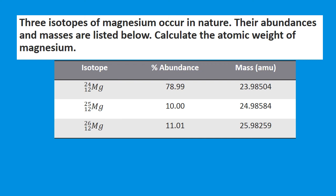This difference exists because some force must hold the particles in the nucleus together. Some of the mass provided by the protons and neutrons is converted into energy to hold the nucleus together — which is why there is enormous energy stored in the nucleus, as demonstrated by nuclear power. Therefore, we use the actual mass of each isotope — not the mass number — to calculate atomic weight.